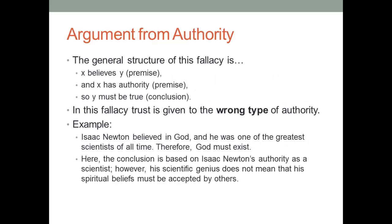Let's move on to our second fallacy: the argument from authority. This fallacy is based on putting faith in the wrong type of authority — that is, believing that what someone says is correct based on their authority, which is a type of authority that does not apply. In this type of fallacy, the premise states that person X or organization X believes something and has authority; therefore, their belief must be true or good or trustworthy. The key point is that we're talking about the wrong kind of authority.